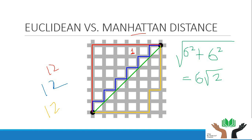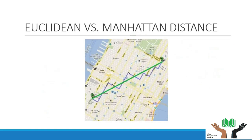Now comes another example of Euclidean versus Manhattan distance. Suppose there are two points A and B. The Euclidean distance is given by the green line, which is the shortest distance, while the taxicab metric or Manhattan distance is the blue line, which moves in a perpendicular fashion, not diagonally.